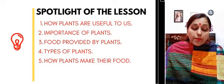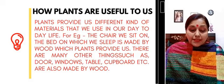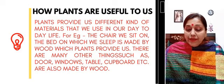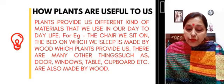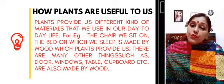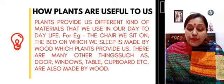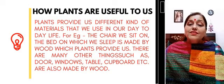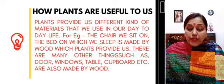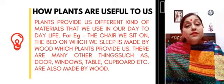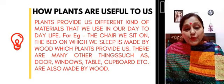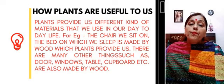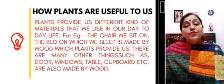So let me start with the first point — how plants are useful to us. Plants provide us different kinds of material that we use in our day-to-day life. For example, the chair on which we sit or the bed on which we sleep is provided by plants, because plants provide us wood. Apart from this, the table, the chair, the doors, the windows, and the cupboards in our houses are made up of wood only. So plants provide us wood for many useful things.